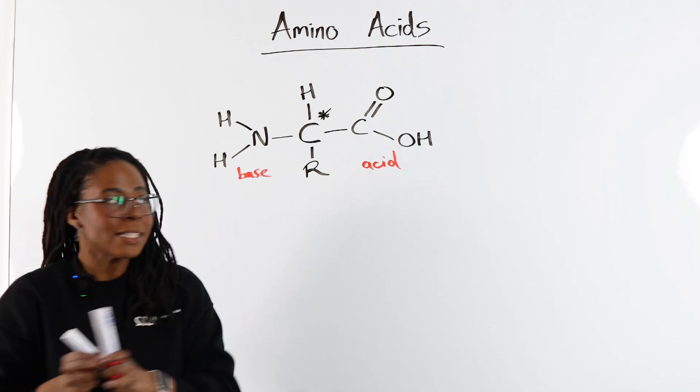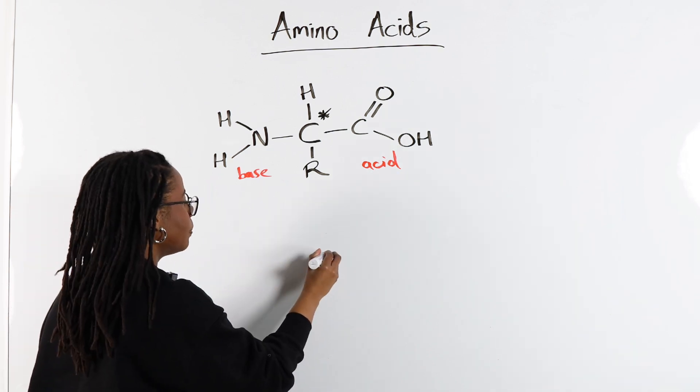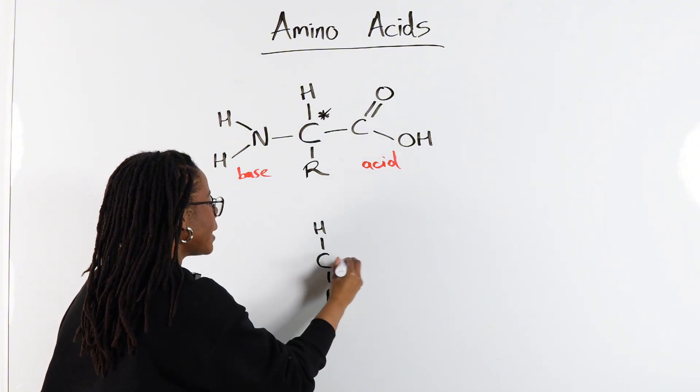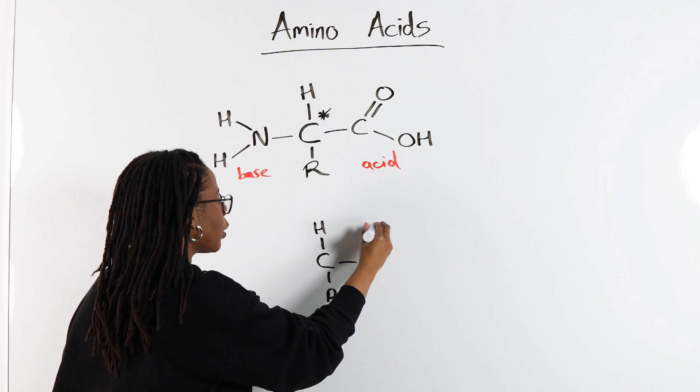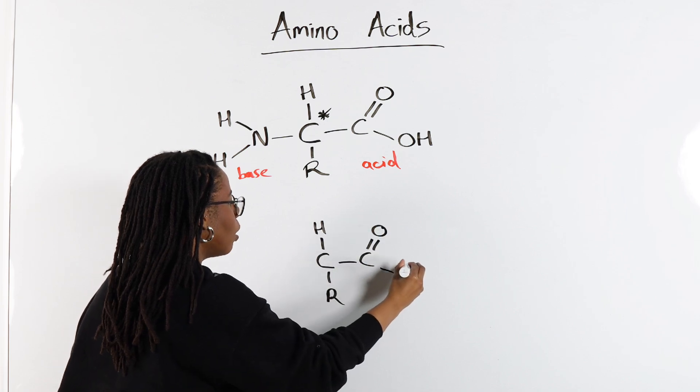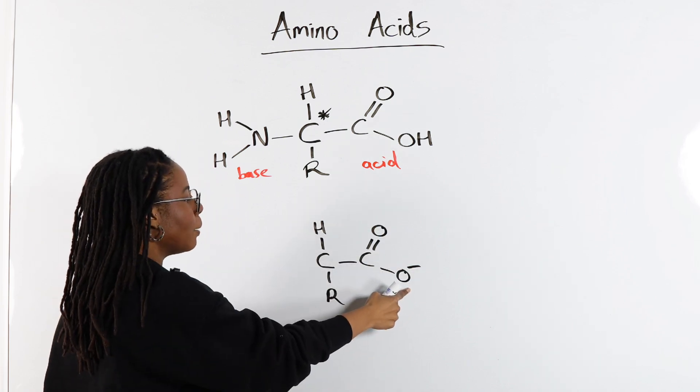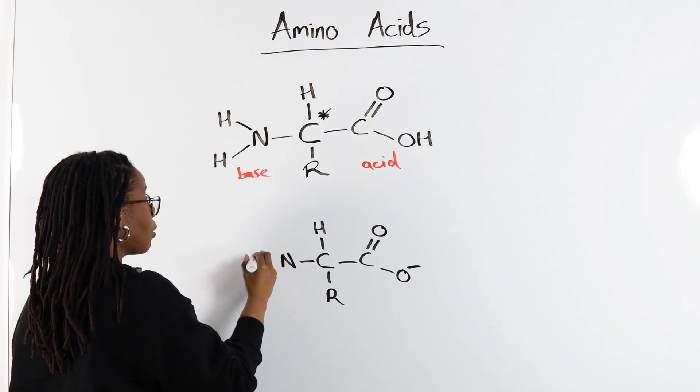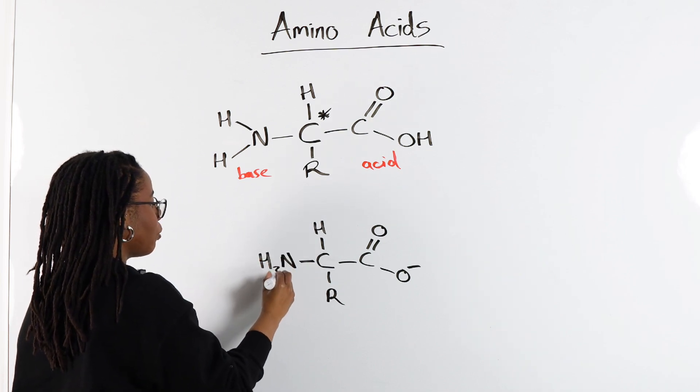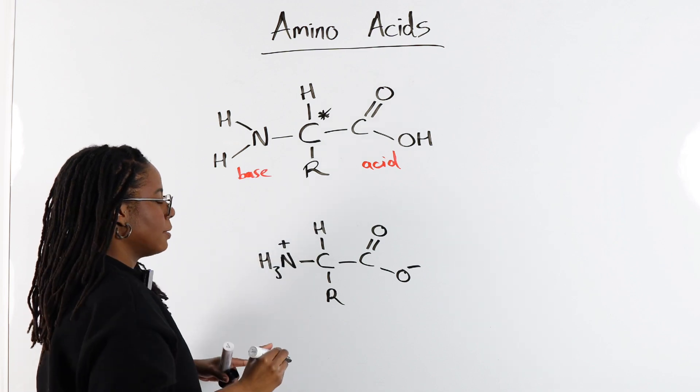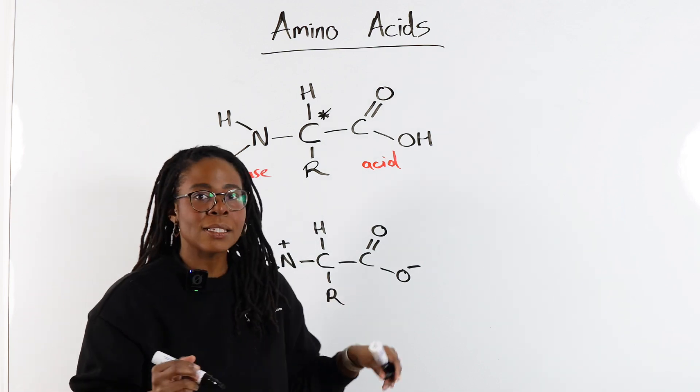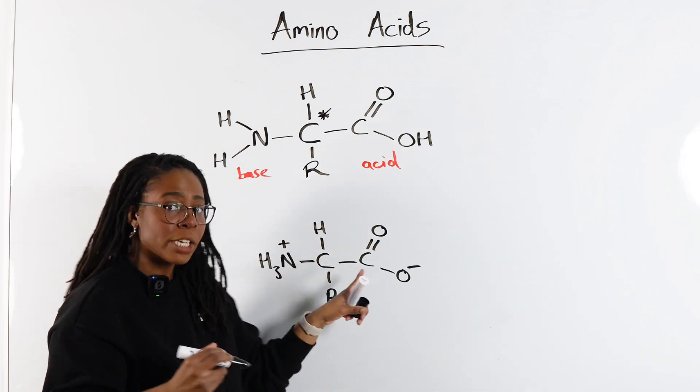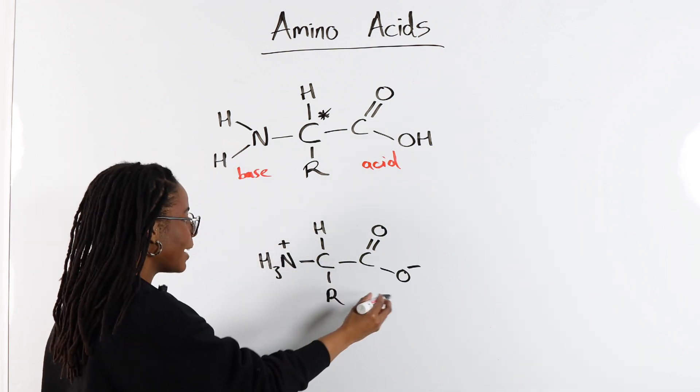So as our zwitterion, instead of COOH, we're going to have COO-, so deprotonated, and then for our amine group, that's now going to be NH3+. Now, as a general definition, zwitterions have got charges, so a molecule with a positive and a negative charge.